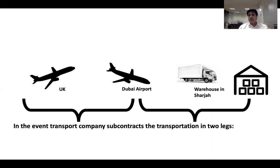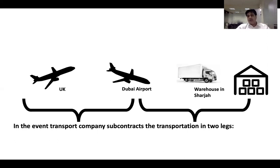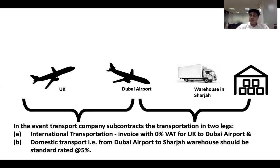Now let's look at the two-leg scenario: I've done two separate contracts. One contract with the airline to pick up goods from the UK and deliver to Dubai airport, and a second contract with a local domestic transport company to pick up from Dubai airport and deliver to my Sharjah warehouse. When there are two legs of transactions, we need to look at each separately. The international transport invoice — UK to Dubai airport — is zero percent, and the domestic transport — Dubai airport to warehouse in Sharjah — is charged at five percent standard rated.